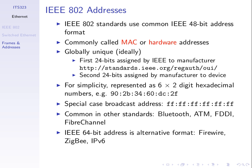An IEEE 48-bit address, sometimes called a MAC address or a hardware address, is 48 bits in length split into two parts. The first 24 bits identify usually the manufacturer — whoever manufactured your LAN card has a unique ID represented in the first 24 bits. The second 24 bits are assigned by the manufacturer to the device, so all LAN cards manufactured by one company would have the same first 24 bits, but the last 24 bits would be different among all devices.